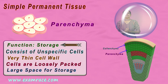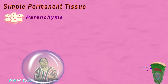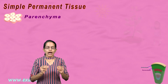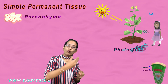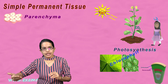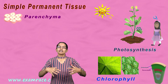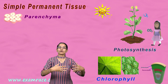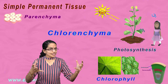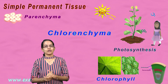This parenchyma is further specialized. If there is a role required to perform photosynthesis, you have chlorophyll that is required, and therefore these are called chlorenchyma. Understand these terms very carefully.